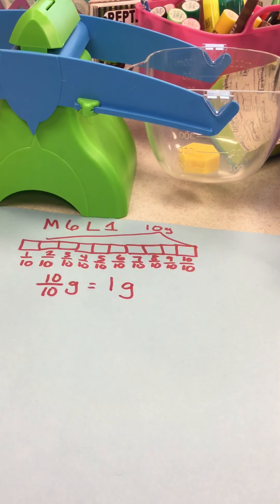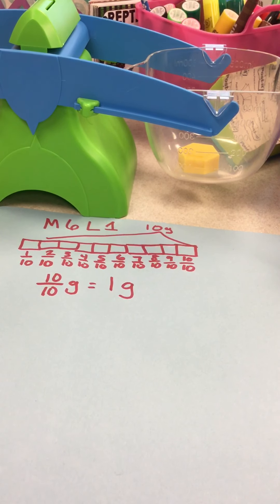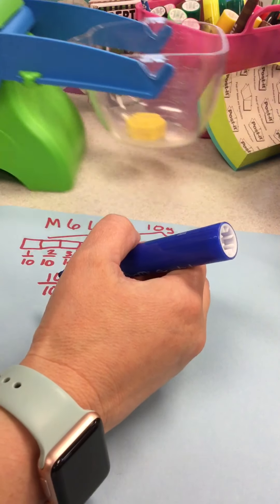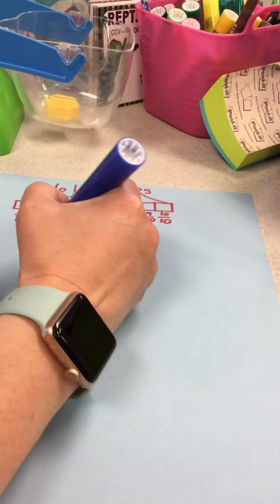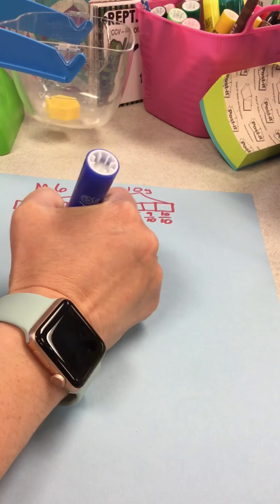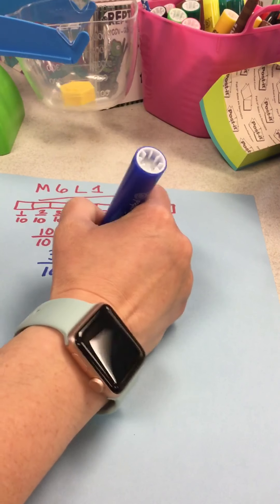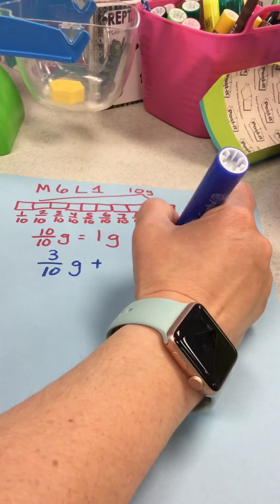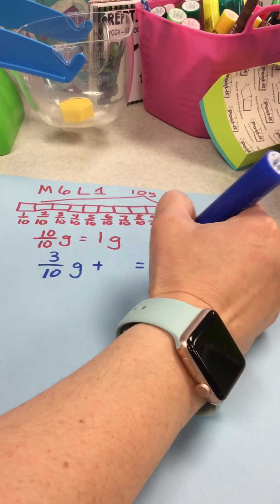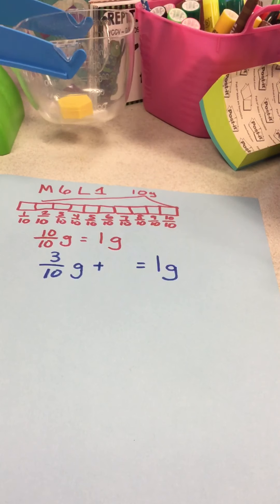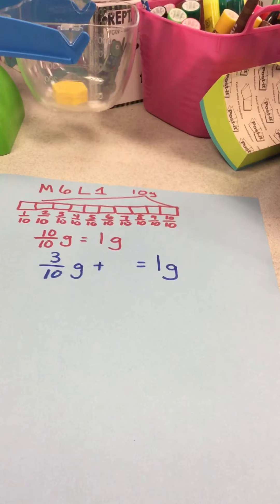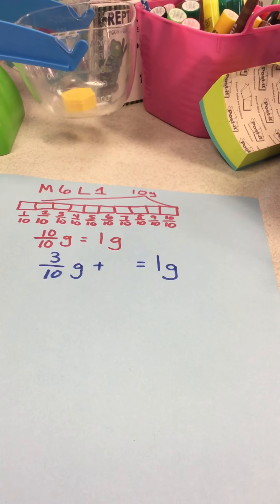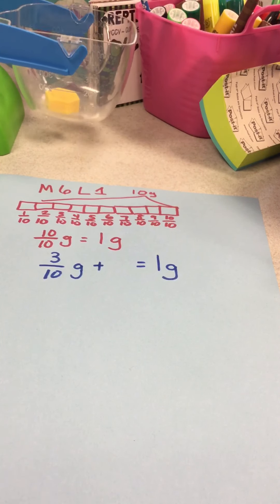That's super important to remember from when we were doing fractions. Let's keep moving. If I had three tenths grams plus what would give me one whole or one gram complete? Three tenths plus what would give me one whole?